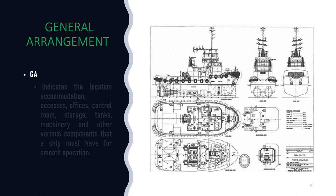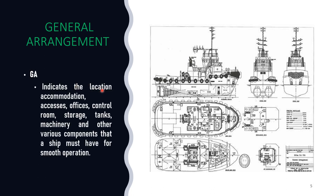The general arrangement plan determines the location of accommodation, access, offices, control room, storage, tanks, machine rooms, and various equipment the ship is equipped with, and where these facilities are available on the ship. It's like a map — like a home map — that tells you exactly where the facilities are located.